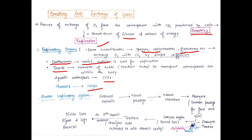Now let's start the human respiratory system. Air enters through the external nostrils, goes to the nasal passage, then the nasal chamber, and then the pharynx. The pharynx is a common passage for food and air. From there, air goes to the larynx, which we call the sound box. There is a leaf-like cover called the epiglottis, which prevents food from entering the larynx.